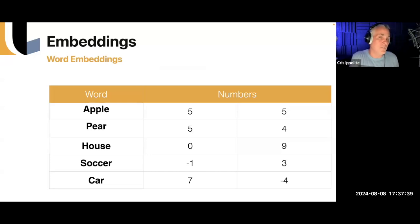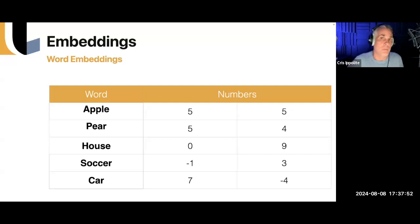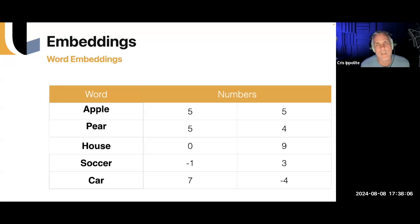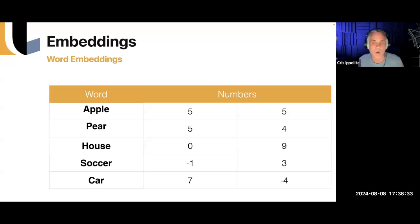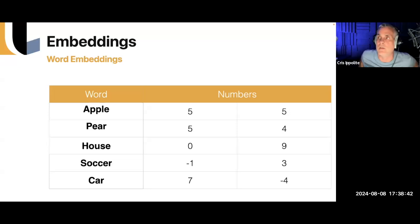Embedding text is a process involving specially trained language models that are tuned to translate words — which humans understand — into numbers that machine learning models understand. A good embedding model can capture features of a word like color, size, or texture. Every sequence of numbers it generates represents a feature of that word. For example, with the word 'soccer,' two numbers might represent features like 'ball' or 'sport.' Those features are actually coordinates that get plotted on a graph.